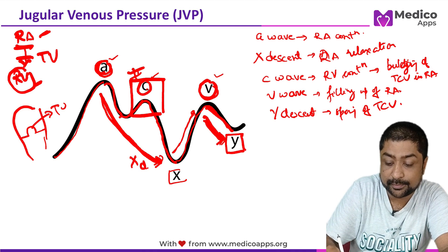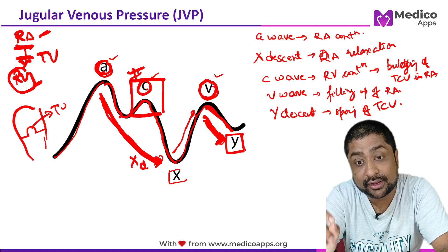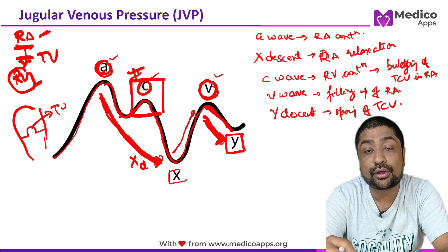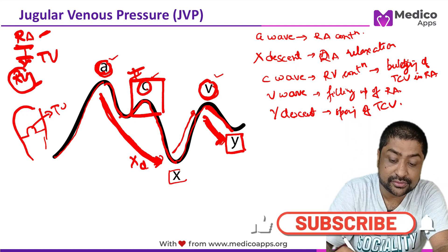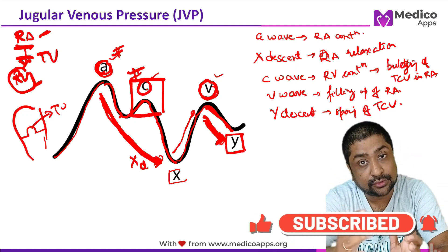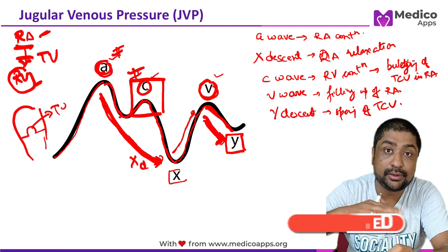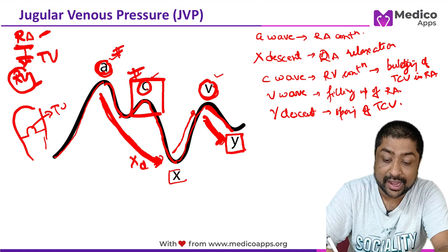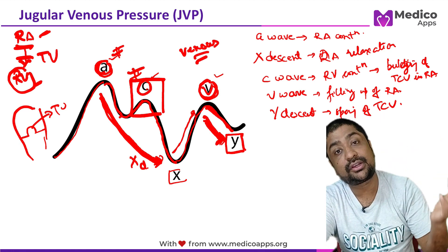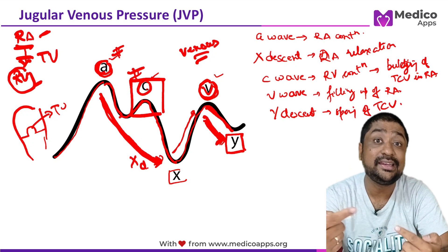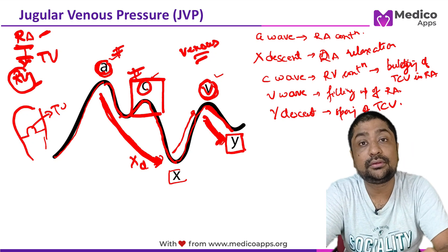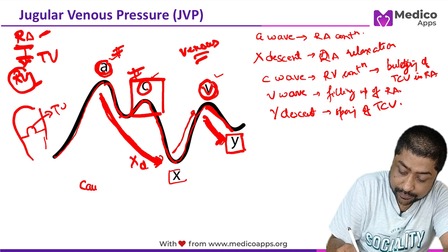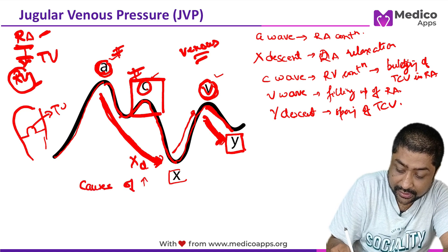In summary: the X descent is due to right atrium relaxation, and the Y descent is due to the opening of the tricuspid valve. The three waves — A wave is caused by contraction of the right atrium, C wave is due to the tricuspid valve bulging into the right atrium during right ventricular contraction, and V wave (V for venous) is when venous return from the body accumulates in the right atrium. Now let's look at the most commonly asked question: causes of increased JVP.